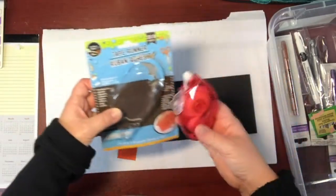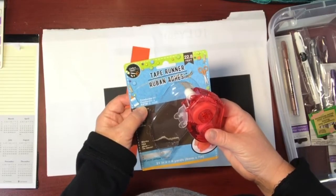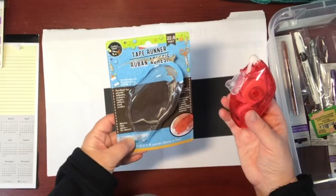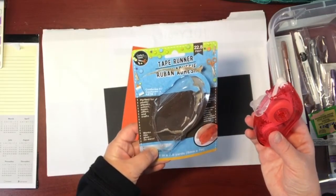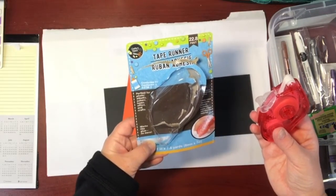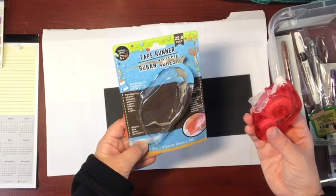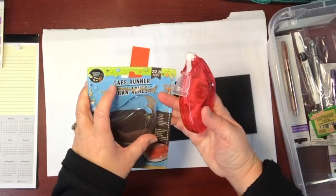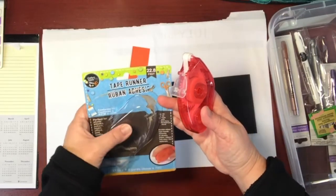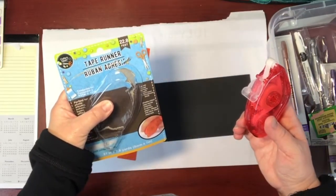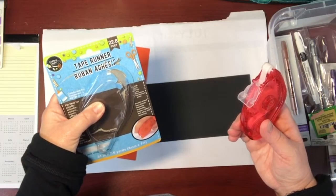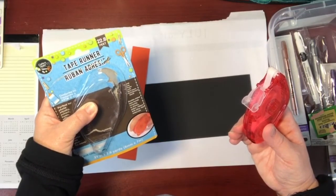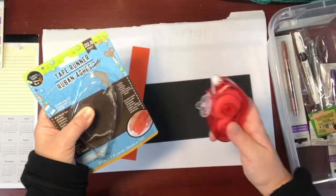It does say here that it conforms to ASTM D4236. It says it is perfect for photo albums, school, home, office and crafts. It says it works like glue, just no mess. It is acid-free, photo safe, non-toxic and permanent bond. It is a double sided tape, bonds instantly to photos, paper, ribbon and other like materials.